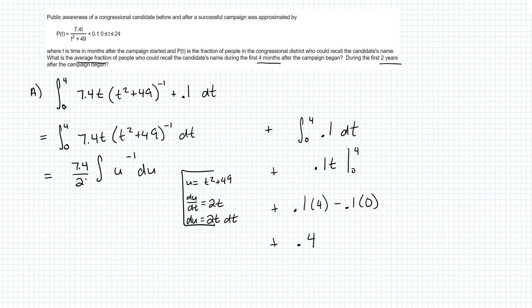So I'm going to bring the 7.4 into the top of my fraction and the 2 into the bottom of my fraction. I am then going to come up with my new upper and lower bounds. So upper bound, I'm going to get by plugging the old upper bound 4 into u, so this is going to be 4 squared plus 49, and if you type that into your calculator you should get 65. And the new lower bound is just 0 squared plus 49, which is 49.